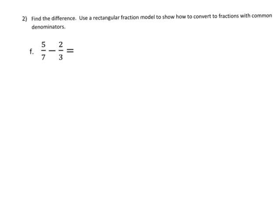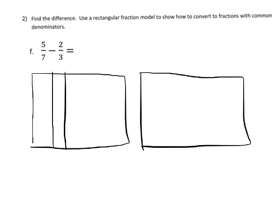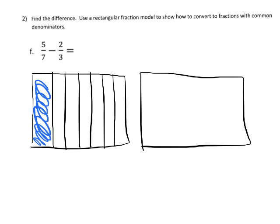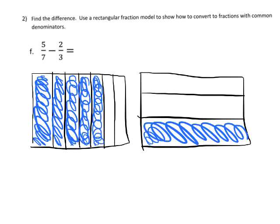All right, another practice: we're going to do five sevenths minus two thirds. My five sevenths — one, two, three, four, five, six, seven; those aren't perfectly equal but it's simulating it — so one seventh, two sevenths, three sevenths, four sevenths, five sevenths. And two thirds: one third, two thirds. So we've got five sevenths and two thirds.